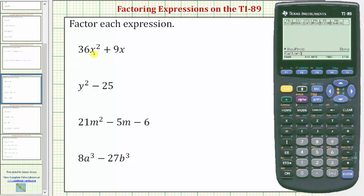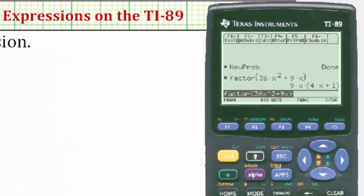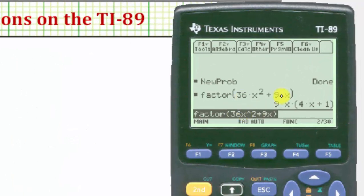And now we enter the expression 36x squared plus 9x. So 36x raised to the power of two plus 9x, close parenthesis and enter. The expression 36x squared plus 9x in factored form is 9x times the quantity 4x plus 1.